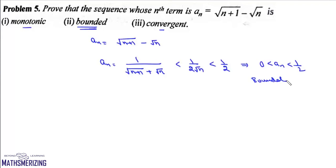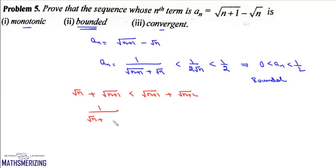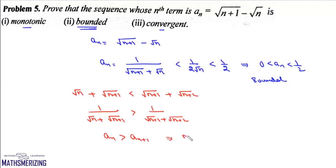To prove the sequence is monotonic, we note that √n + √(n+1) < √(n+1) + √(n+2). Taking reciprocals reverses the inequality: 1/(√n + √(n+1)) > 1/(√(n+1) + √(n+2)), that is aₙ > aₙ₊₁. Therefore the sequence is monotonically decreasing, and hence monotonic.